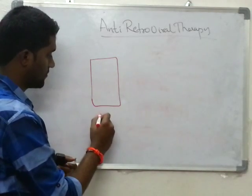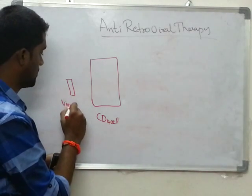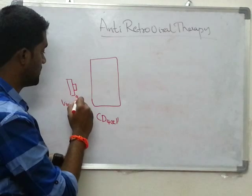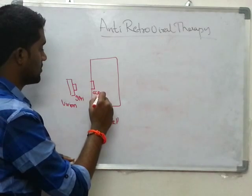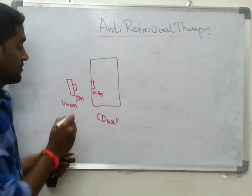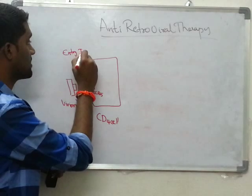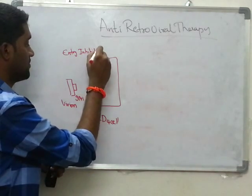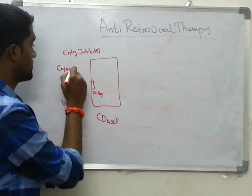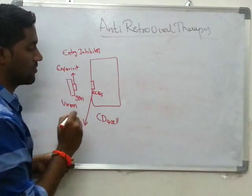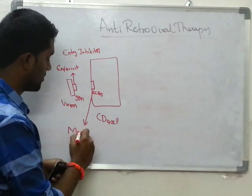Suppose this is the CD4 cell and this is the virion particle. It will have GP41 envelope and on the CD4 side is CCR5 — this is the portal of entry. So the drugs called entry inhibitors function here. The first important one, acting on GP41 and preventing its fusion, is Enfuvirtide. Then acting as a CCR5 antagonist and stopping viral entry is Maraviroc.